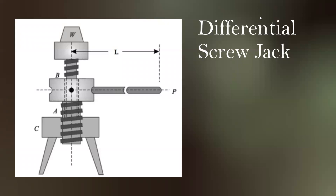Welcome to the last portion on screw jacks. The last topic is what's known as the differential screw jack. We call it 'differential' because the differential screw jack possesses two screws — unlike a regular screw jack which had only one screw. The difference in the sets of screws, sometimes in their mean diameter or pitch, is why we use the prefix 'differential'.